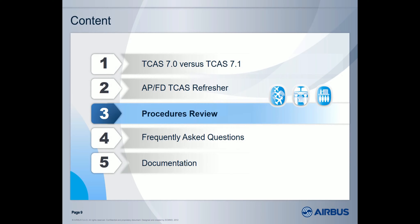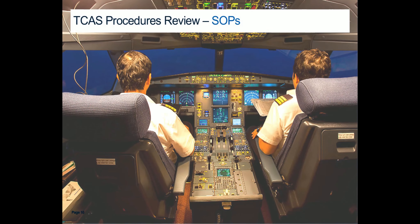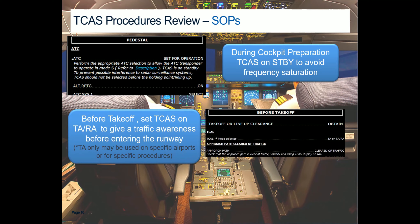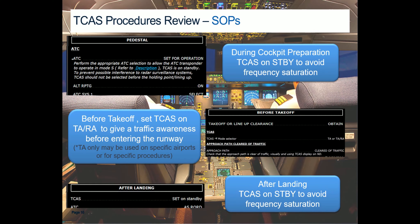Now that we have in mind the TICAS and the APFD-TICAS principle, let's focus on the procedure to apply. First, on ground, the Airbus recommendation is to set the TICAS on standby in order to avoid frequency saturation and also to avoid disturbing air traffic control. Then, before takeoff — following the takeoff or lineup clearance and before entering the runway — the Airbus SOP requires setting the TICAS mode to TA/RA, as recalled in the before takeoff checklist. The idea is to use the TICAS as an additional means to check that the approach path is clear of traffic, increasing situational awareness. After landing, the same recommendation applies: TICAS is set to standby to avoid frequency saturation. This SOP applies for both the standard TICAS and the APFD-TICAS.